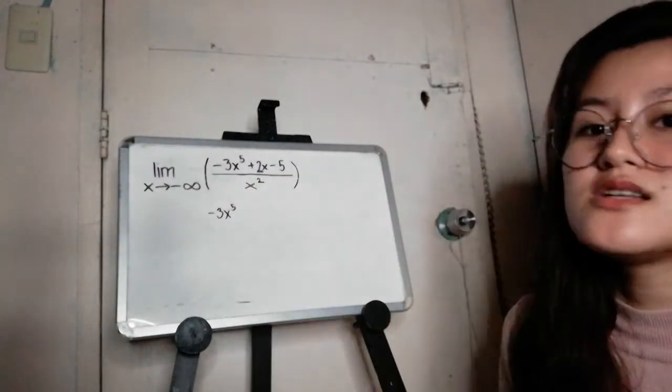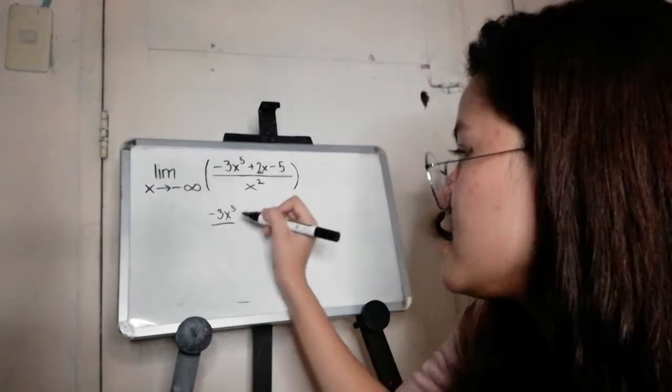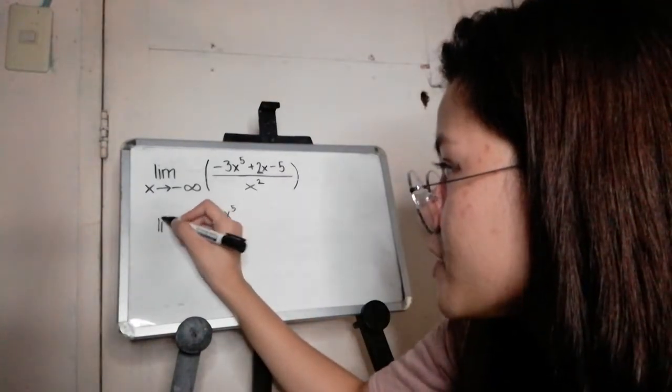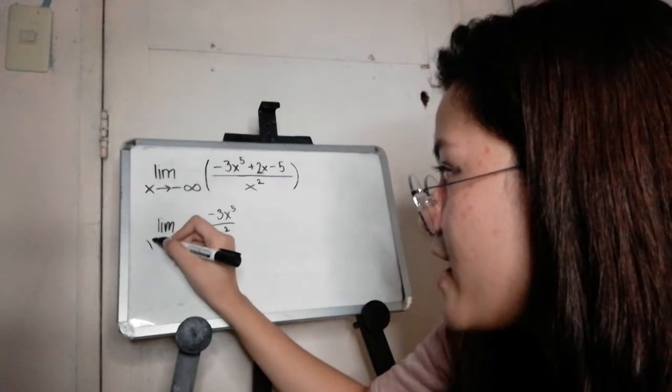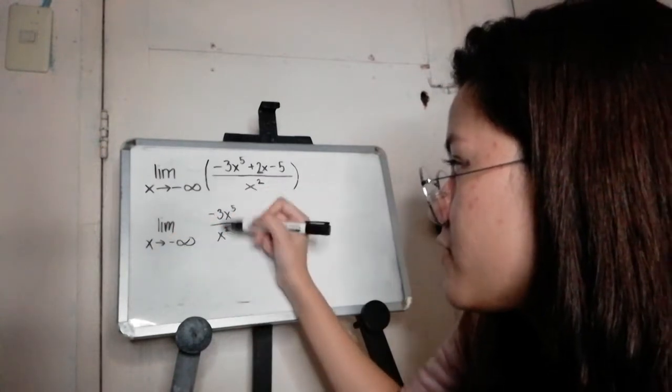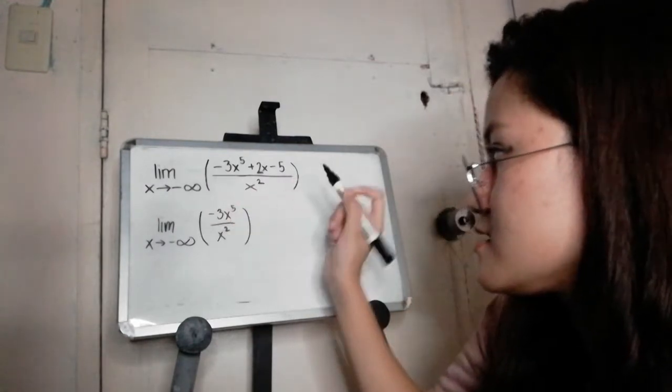While on the denominator, it's obvious it is x squared. So let me rewrite that again. So the limit of x as it approaches negative infinity of the function, this one.